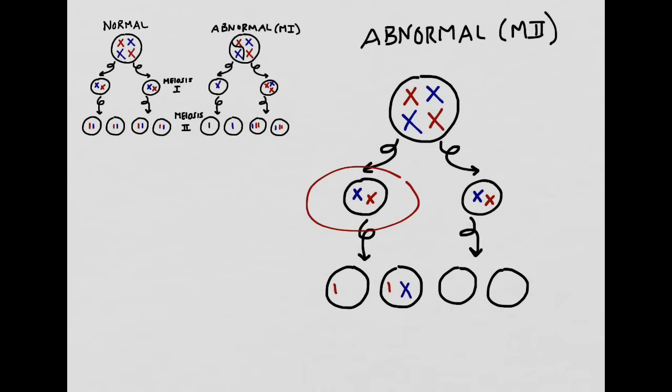This is what the daughter cells would look like after both rounds of meiosis if there was non-disjunction. Non-disjunction simply means that the sister chromatids failed to separate correctly. Even if this cell over here on the right divides perfectly, you still have half of your cells that are not correctly formulated in terms of the number of chromosomes that they have.